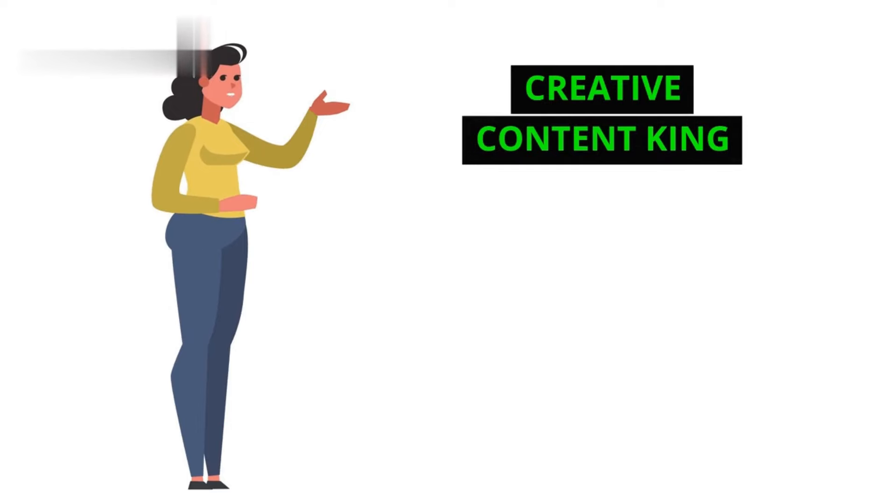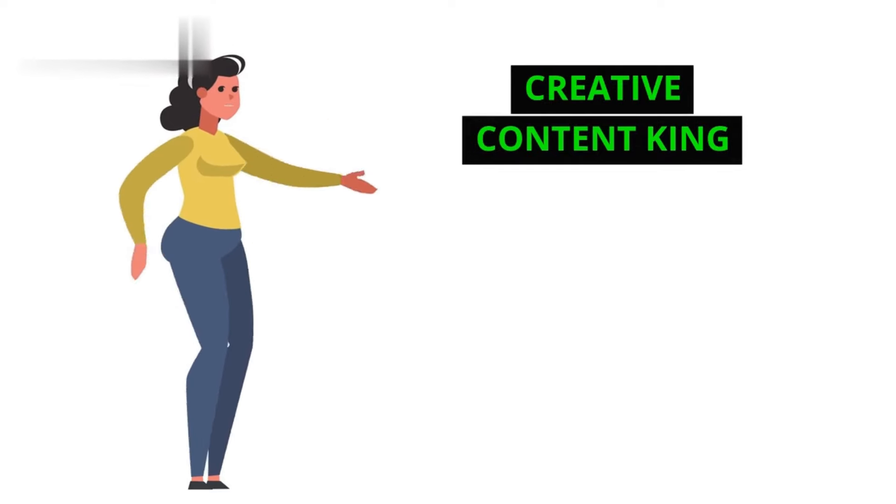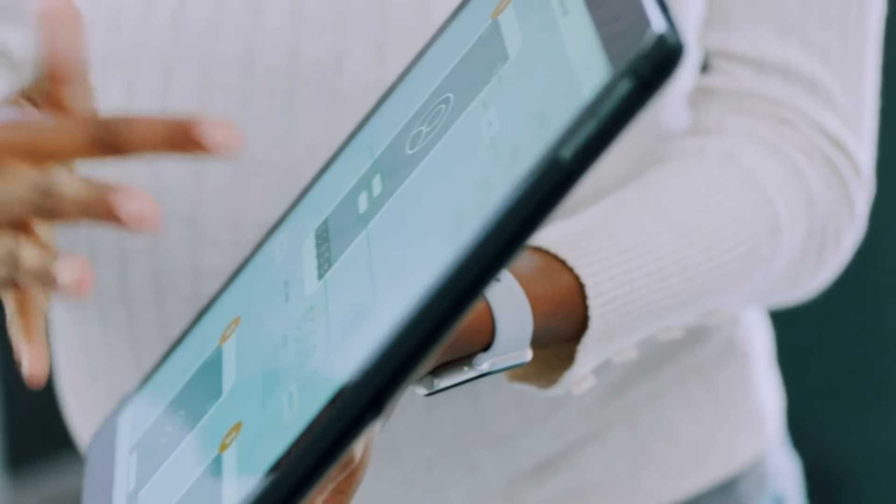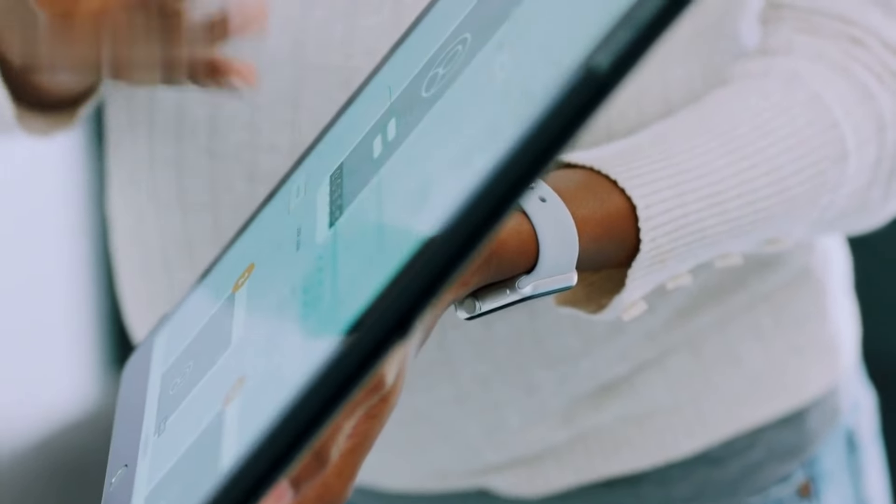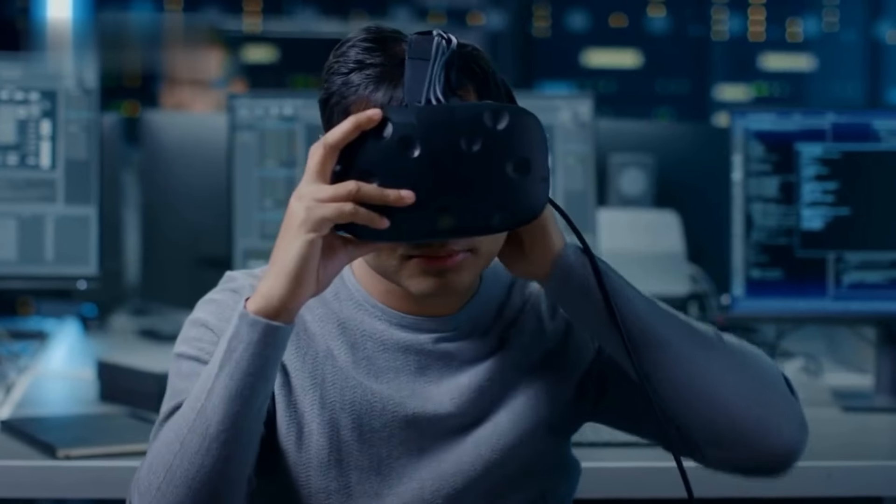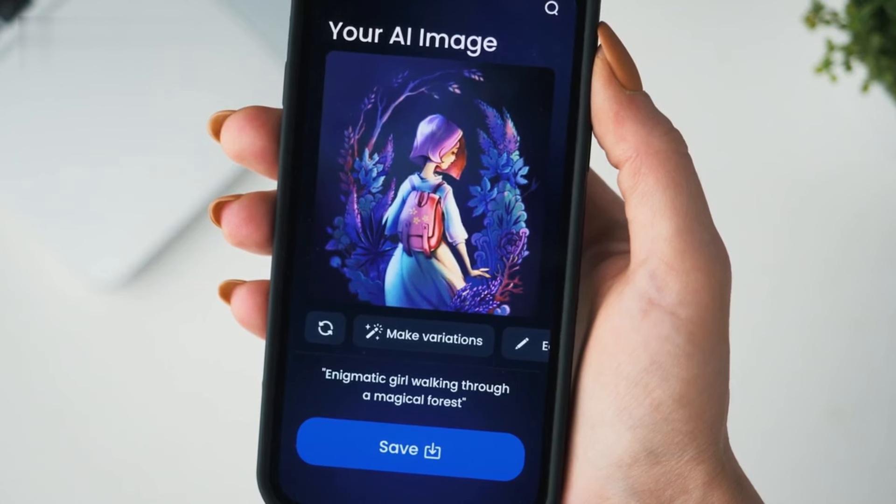Number 4: Creative Content King. Unleash your inner artist with ChatGPT. Generate song lyrics, poems, scripts, or even code for video games. Partner with musicians, filmmakers, or game developers to bring their ideas to life. You can even create and sell your own AI-generated art pieces as NFTs.